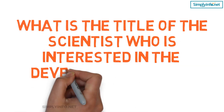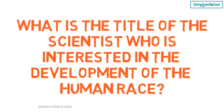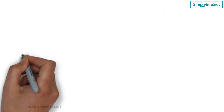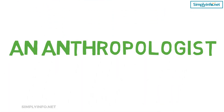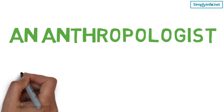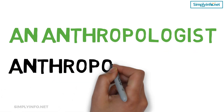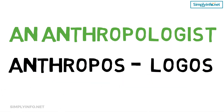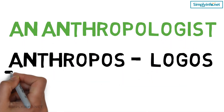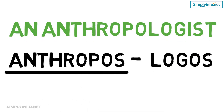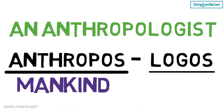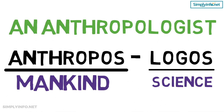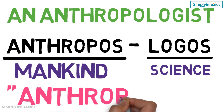What is the title of the scientist who is interested in the development of the human race? An anthropologist. The word anthropologist is derived from two Greek words: anthropos, which means mankind, and logos, which means science or study. The science is anthropology.